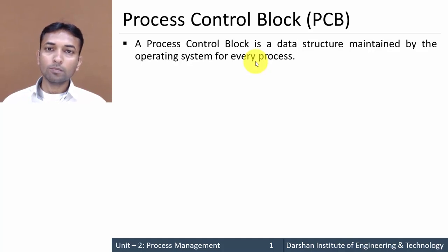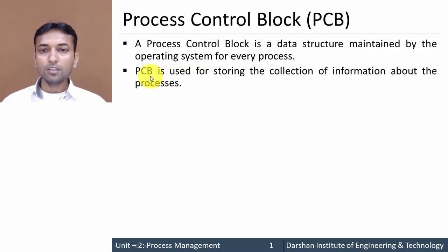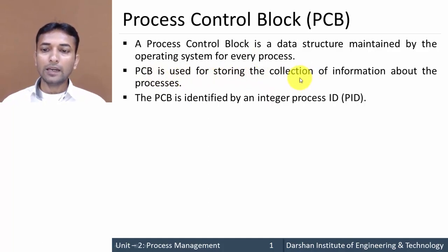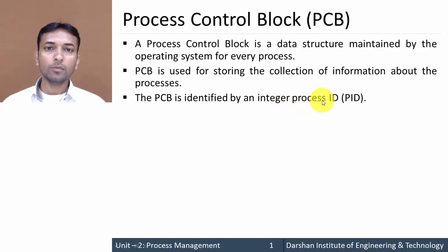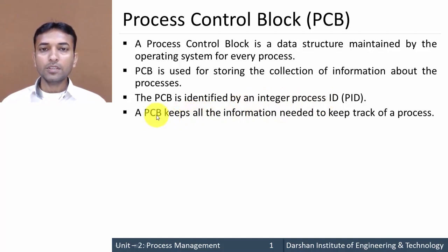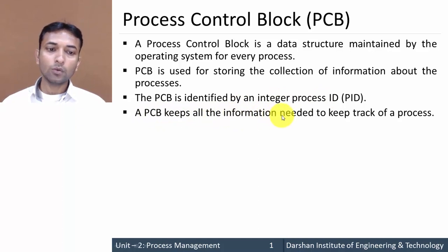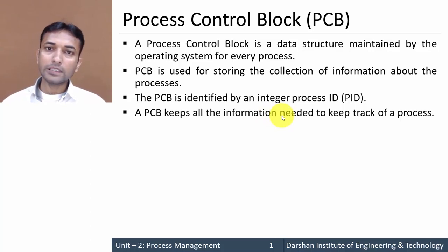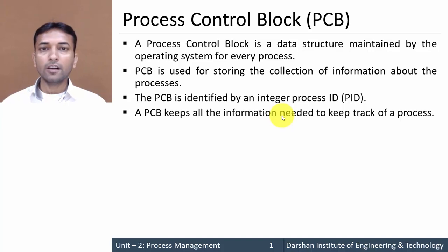PCB is used for storing a collection of information about the process. Each PCB is identified by an integer Process ID, known as PID. A PCB keeps all the information needed to track a process — from the creation to the termination of the process, every piece of information is stored in the PCB.